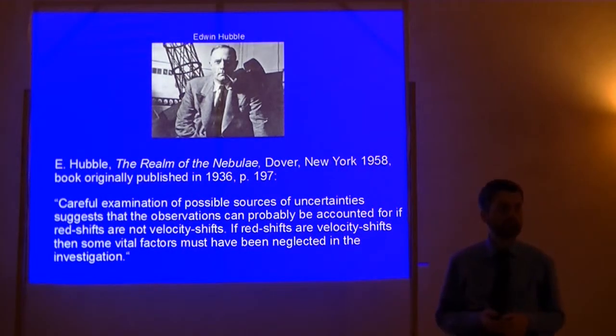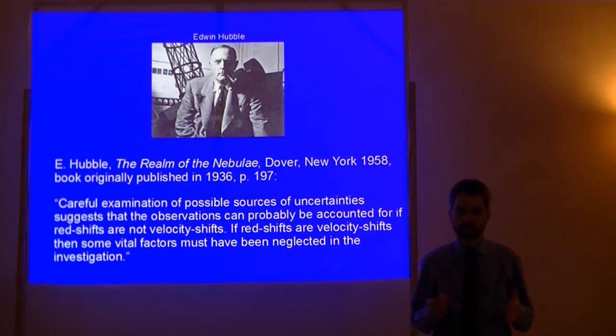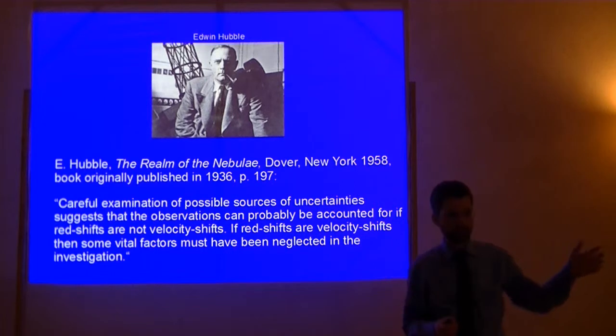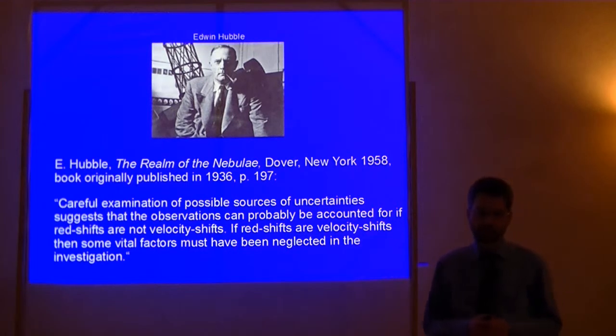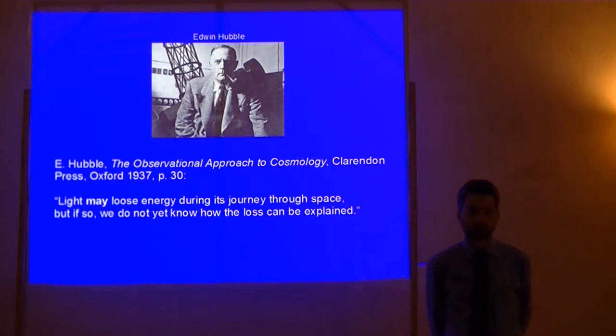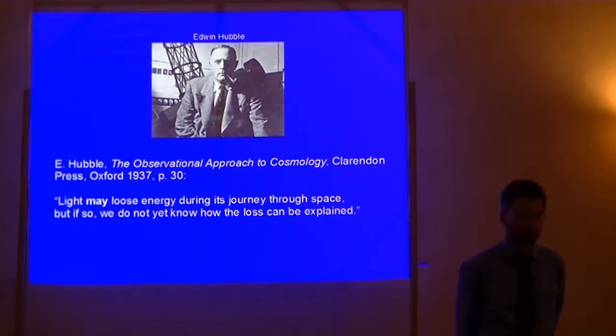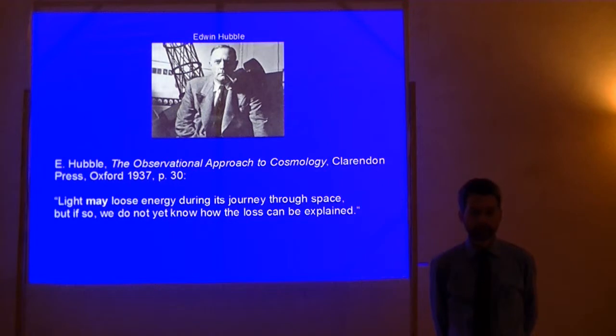There can be other factors. Edwin Hubble himself was very reluctant in accepting this interpretation of Georges Lemaître. He was a real observational, empirical scientist. He did very much pioneering work in measuring redshifts. And he writes in The Realm of the Nebulae in 1936, careful examination of possible sources of uncertainties suggests that the observations can probably be accounted for if redshifts are not velocity shifts. If redshifts are velocity shifts, then some vital factors must have been neglected in the investigation.